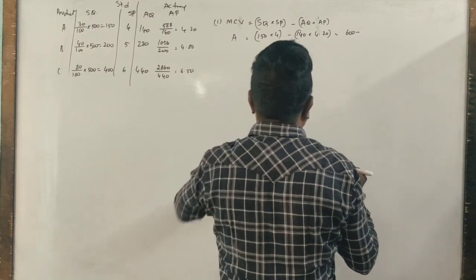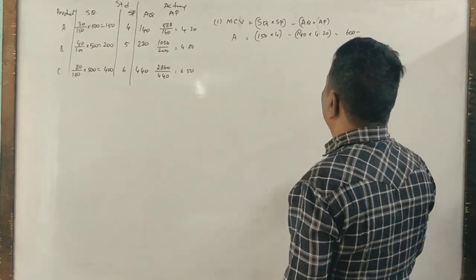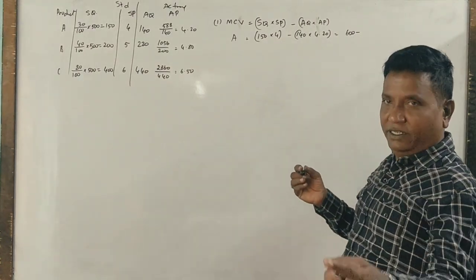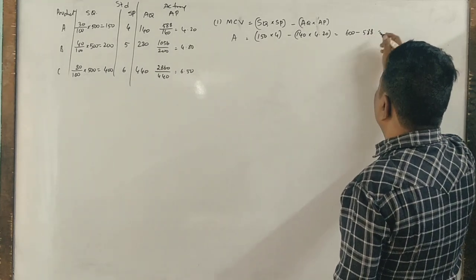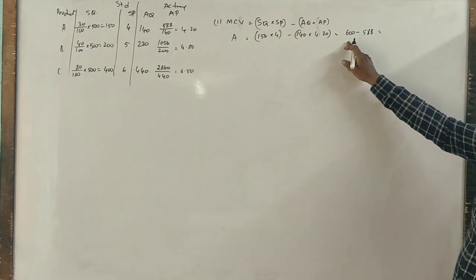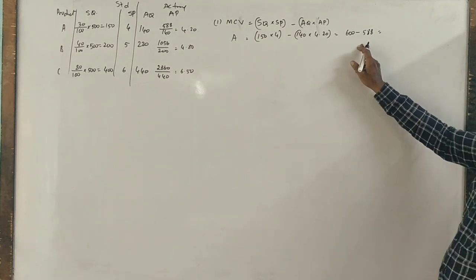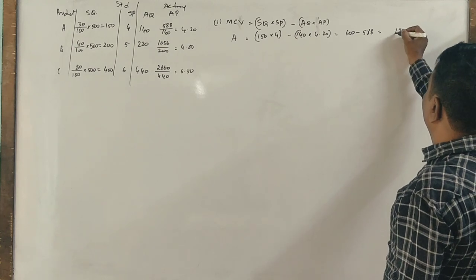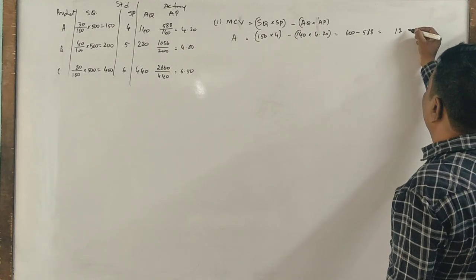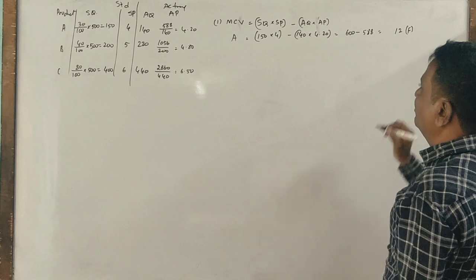150 into 4 is 600 minus 140 into 4.2, which is 588. That's 12 favorable. This is favorable.